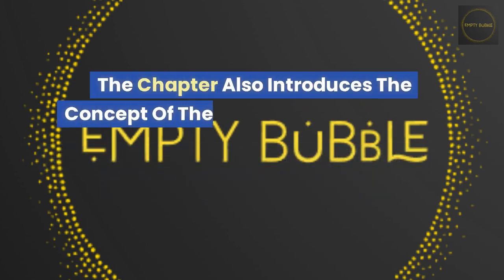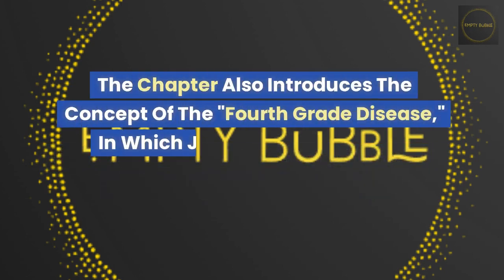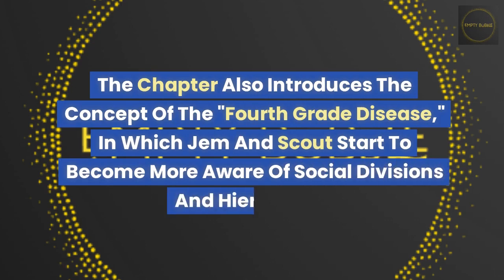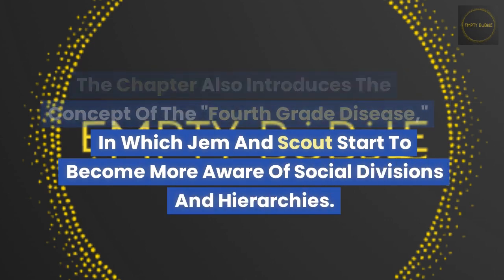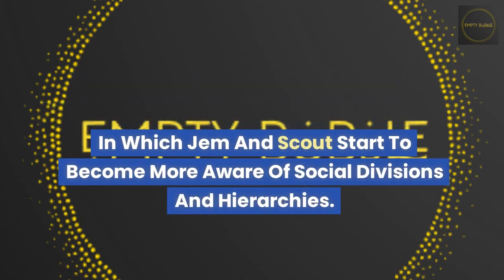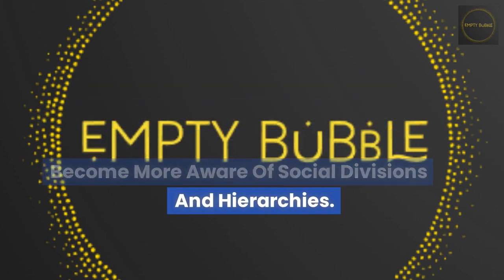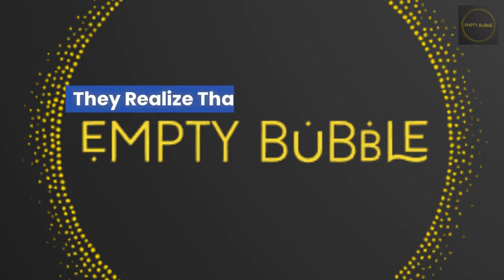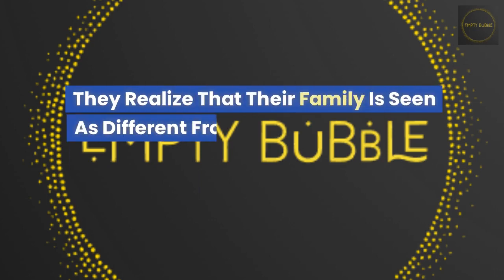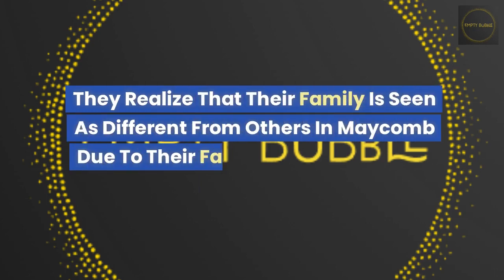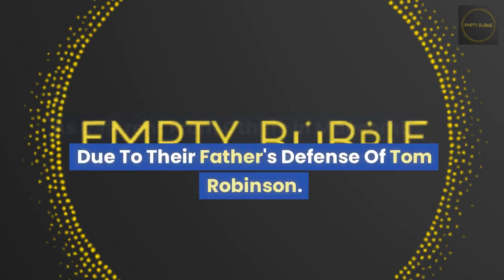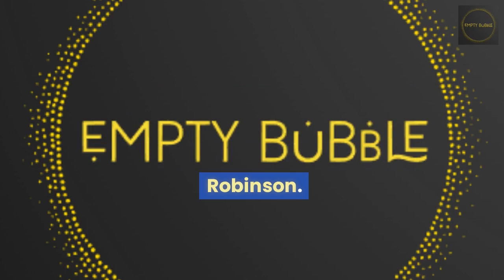The chapter also introduces the concept of the 'fourth-grade disease,' in which Jem and Scout start to become more aware of social divisions and hierarchies. They realize that their family is seen as different from others in Maycomb due to their father's defense of Tom Robinson.